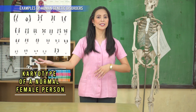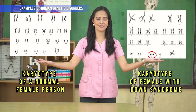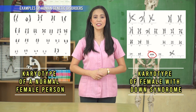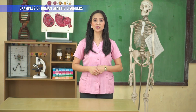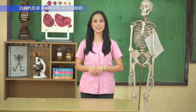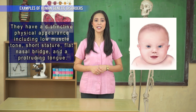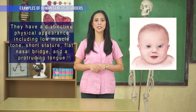This is how the karyotype of a female with Down syndrome looks. As we observe, an individual with Down syndrome receives an extra chromosome 21. They have a distinctive physical appearance including low muscle tone, short stature, flat nasal bridge, and a protruding tongue.